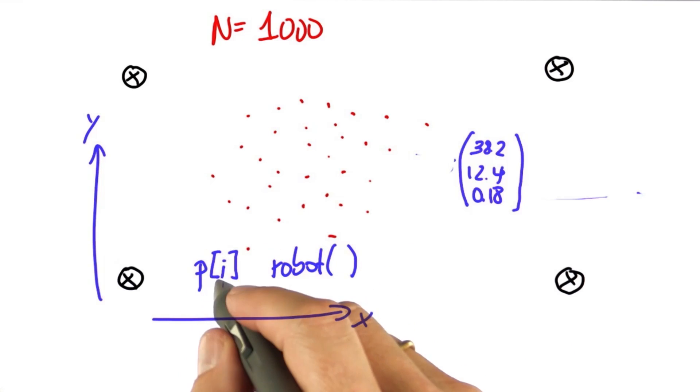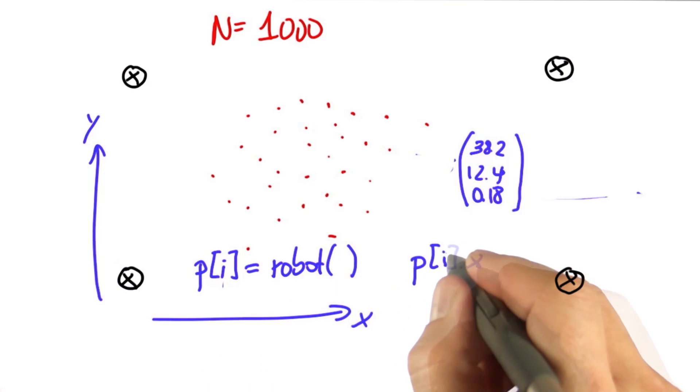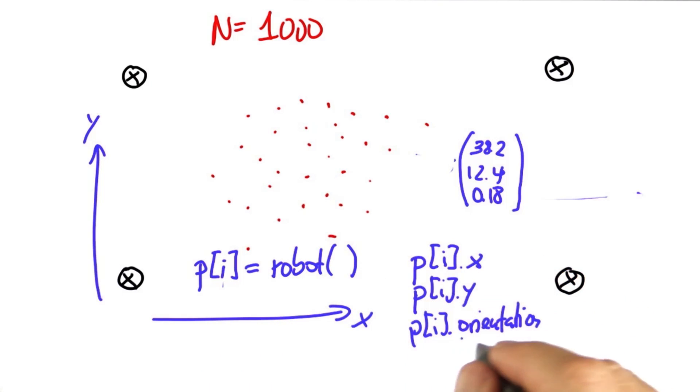these elements, p of x, y, and orientation, which is the same as heading, are initialized at random.